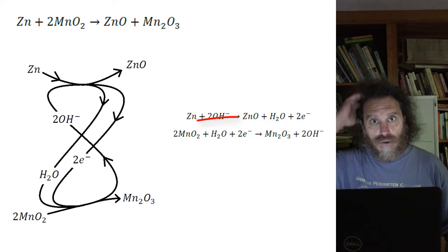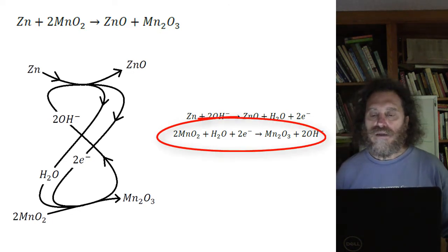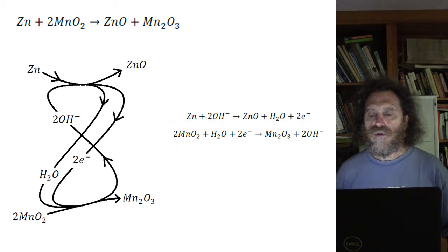In the other compartment, there's a reaction going on. Manganese dioxide combines with water molecule and two electrons to form manganese three oxide and two hydroxides. What do you notice about these two reactions? The first one uses up two hydroxides and produces a water molecule and two free electrons. The other reaction uses up a water molecule and two electrons and produces hydroxides.